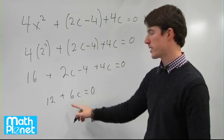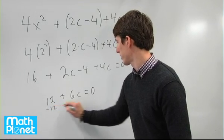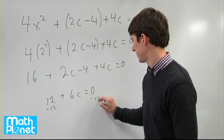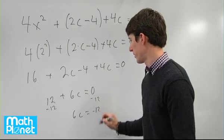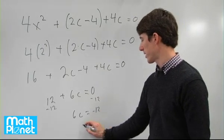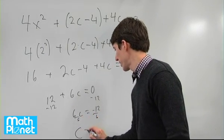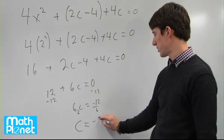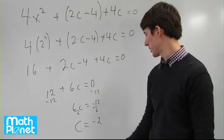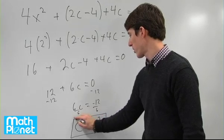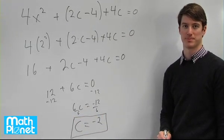That's still equal to 0, so now we can solve for c. Subtract 12 from both sides: 6c equals negative 12. Divide by 6, and c is equal to negative 2. Negative 12 divided by 6 is negative 2. So that's our answer for c, if x is equal to 2.